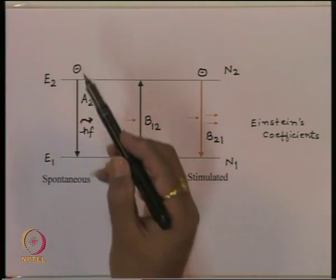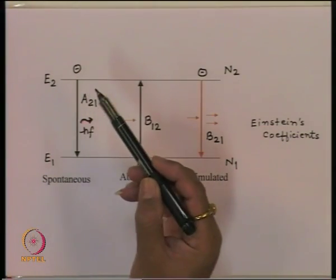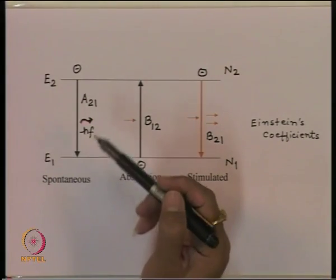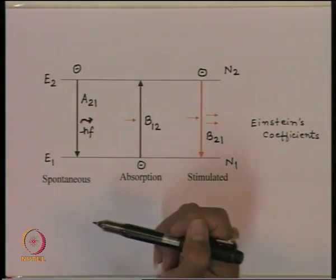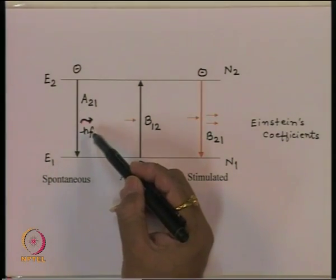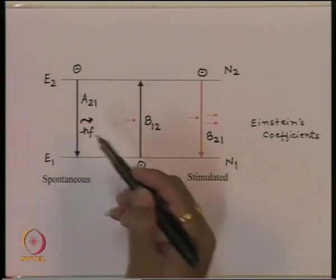In the last lecture, we saw that inside a material there are three processes which take place: namely the spontaneous process, the stimulated process, and the absorption process. The stimulated process takes place on its own. If the electron is in the higher energy state, it naturally tends to relax to the lower energy state, and in that process the photon is released, which we call the spontaneous photon.